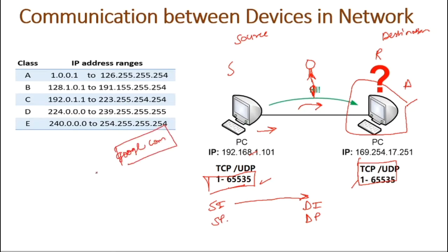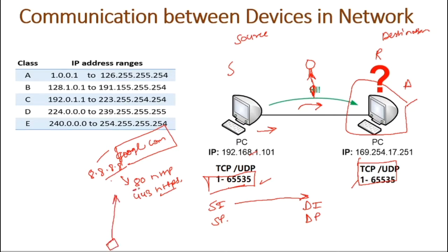Let me give an example. When we open google.com, it has some IP address — suppose 8.8.8.8 (that's actually a DNS server, but I'm using it as an example web server). When I open google.com, the request hits port 80 for HTTP, or port 443 for HTTPS. That is the destination port number, and my computer would have some random source port number — it could be anything.